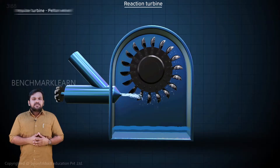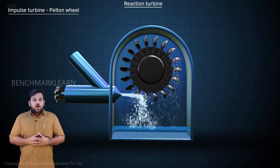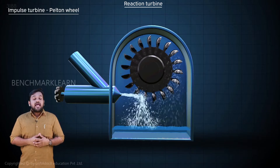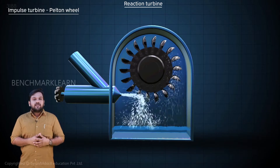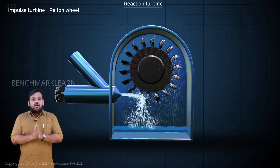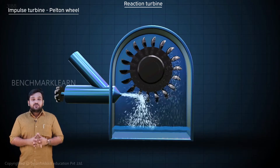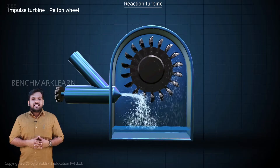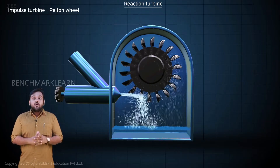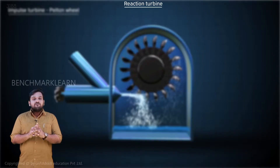In an impulse turbine, the pressure along the blade is constant and atmospheric. It does not play a role in creating the force. So the casing in an impulse turbine is only to prevent the splashing of water.